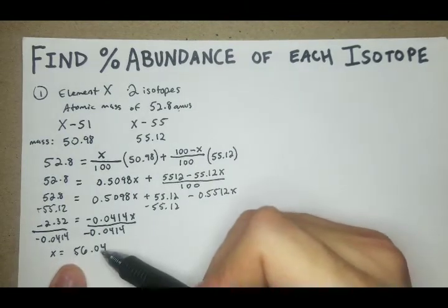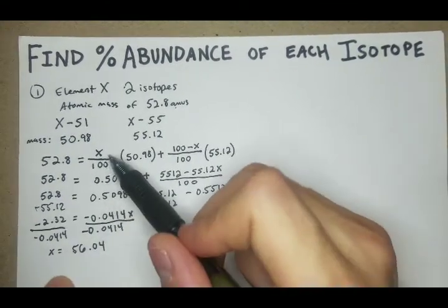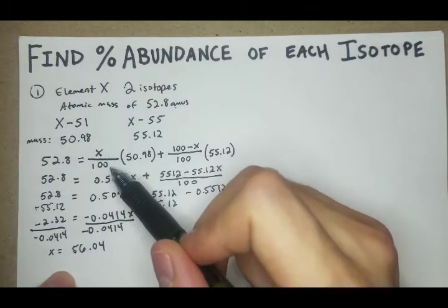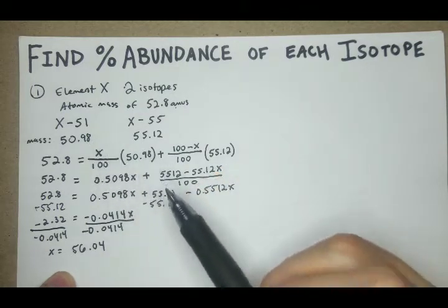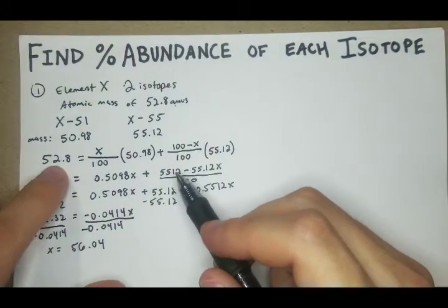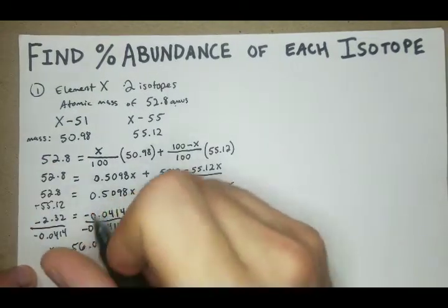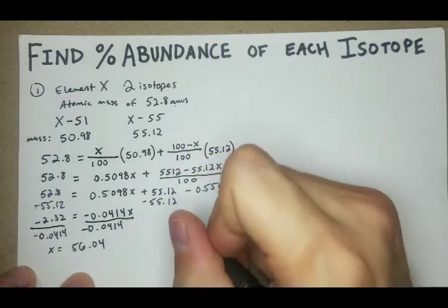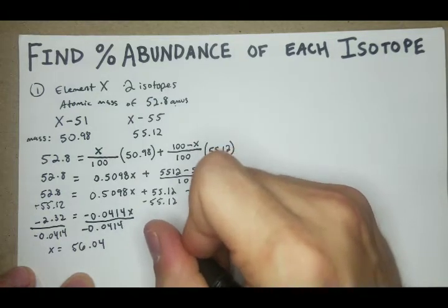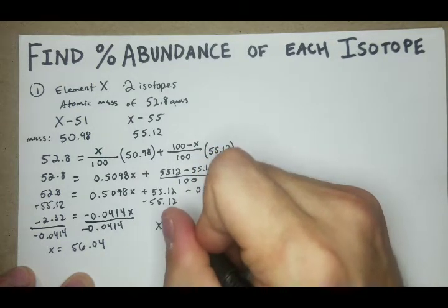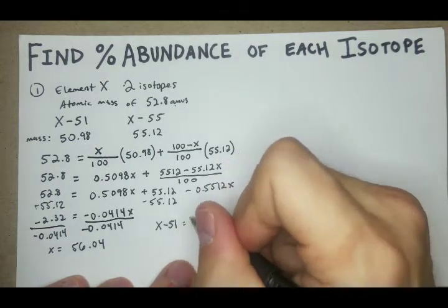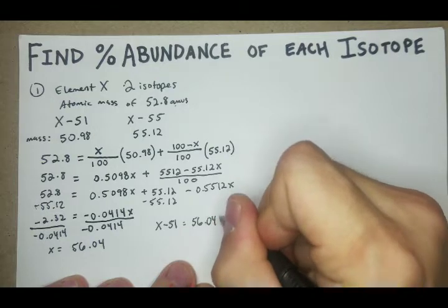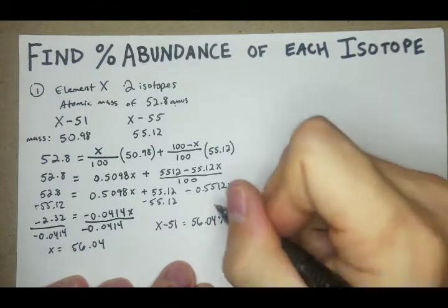Now we'll see what the relevance of this X is. We set X over 100 because we were trying to find the percentage of this. It's all going to add up to 52.8. So the X-51 isotope is going to be 56.04 percentage. That's going to be the percent abundance.